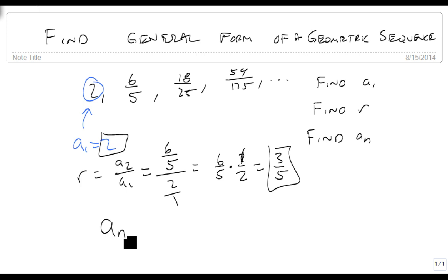All we need to do now is say that An equals A1 times R raised to the n minus 1 power, and we get our general term.